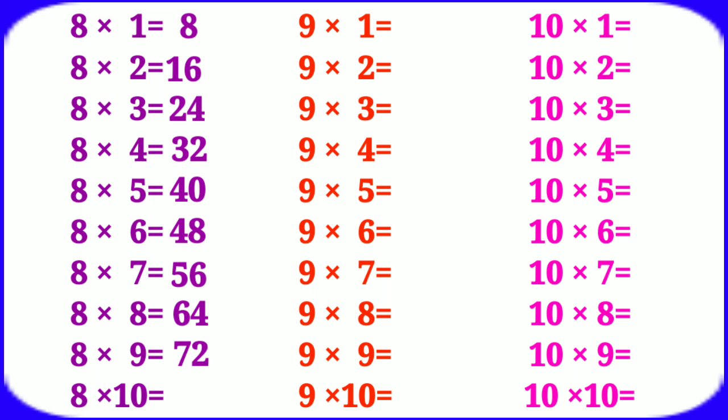8 tens are 80. Table of 9: 9 ones are 9, 9 twos are 18, 9 threes are 27, 9 fours are 36.